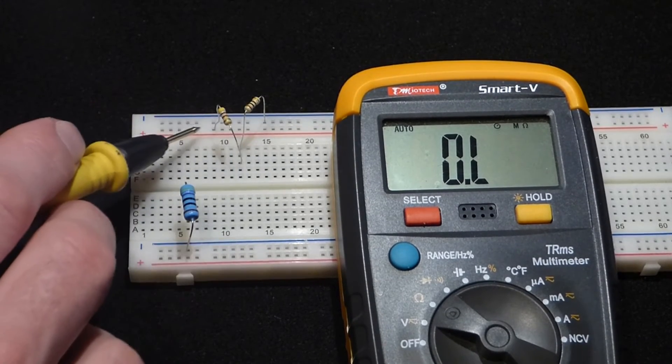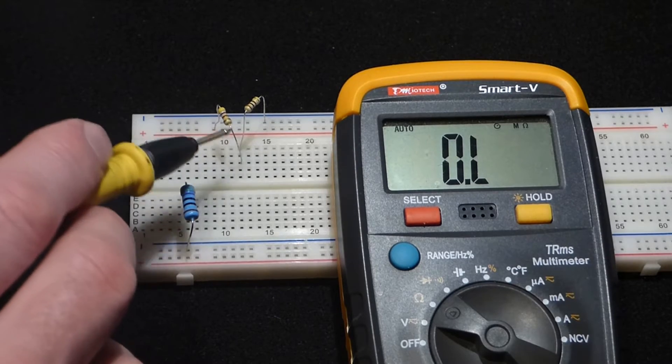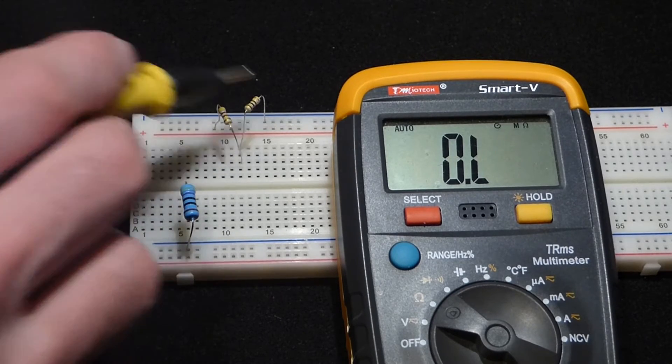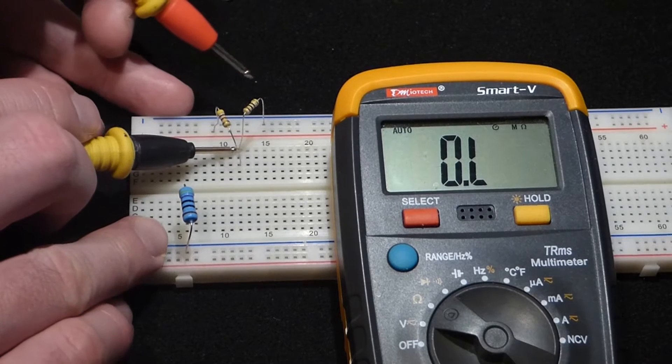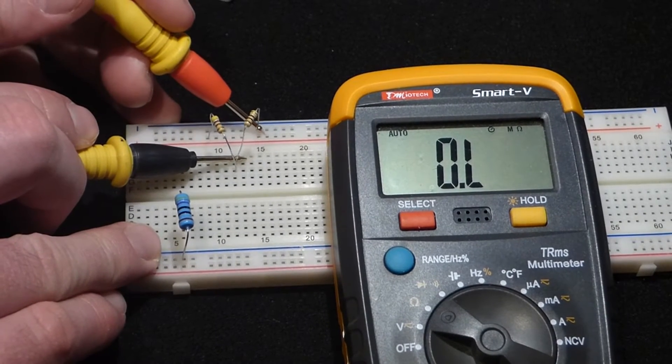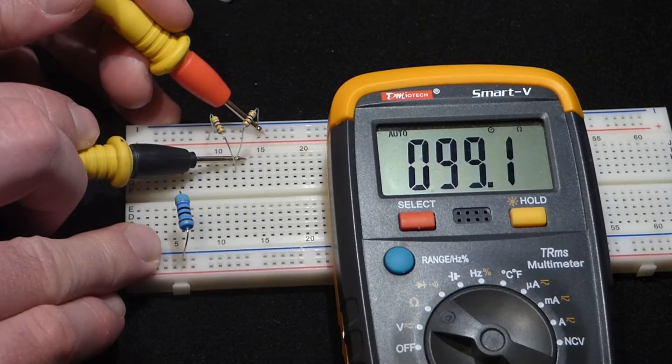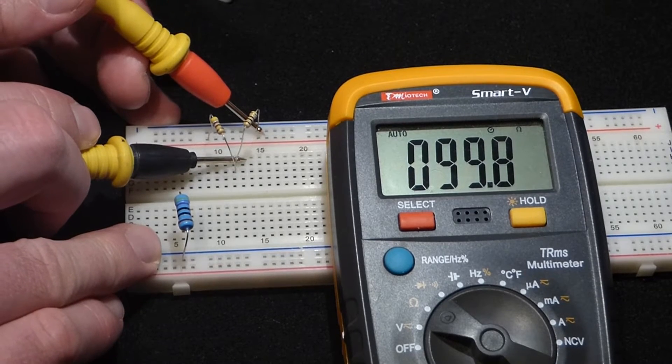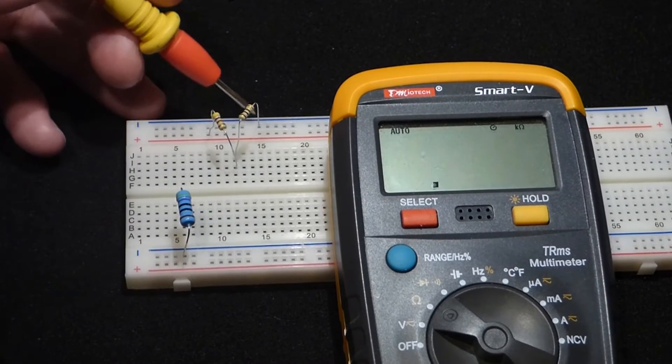Right now these resistors are in series. This one's connected to positive, comes here, and then connects to this other one. So this other resistor now is only 100 ohms, just slightly off, but well within tolerance.